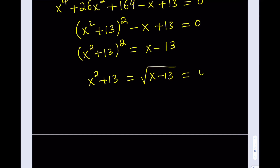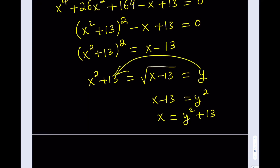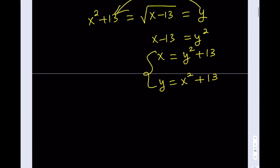I'm going to set this equal to y. From the second part of the equation I get x minus 13 equals y squared if I square both sides. Then adding 13 to both sides gives me x equals y squared plus 13. And indirectly I also get y equals x squared plus 13. If I take this as a system, I'm going to get something really nice.